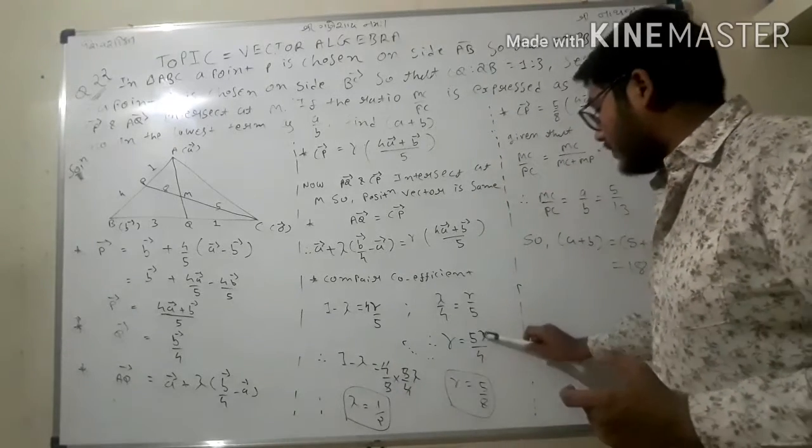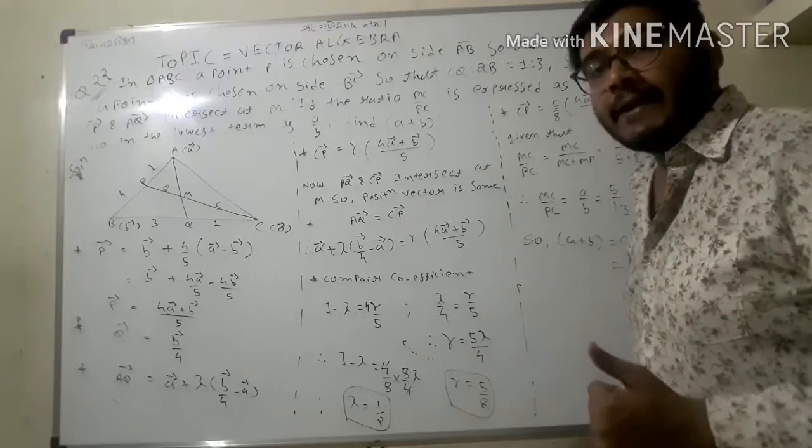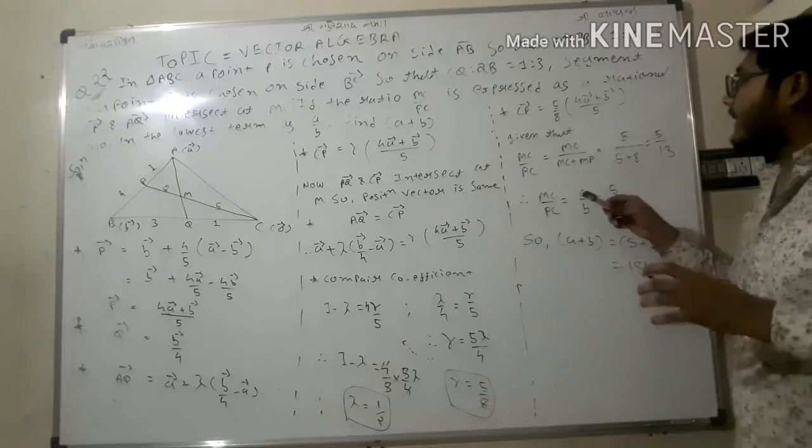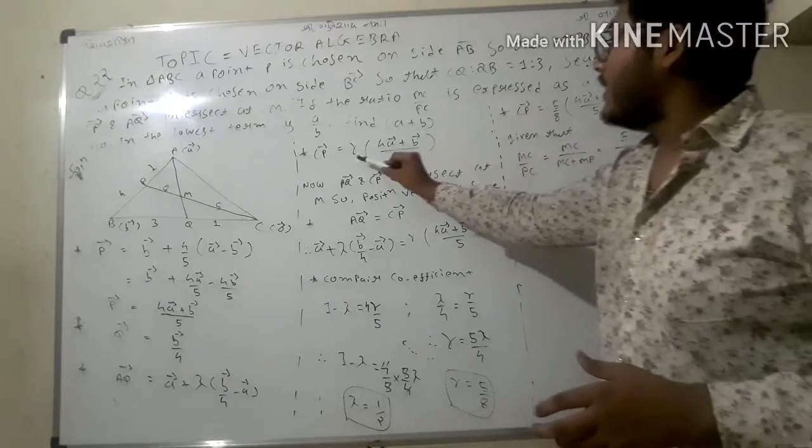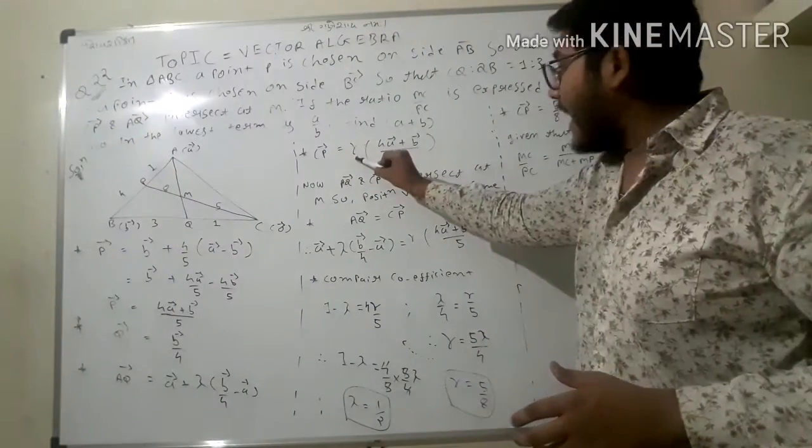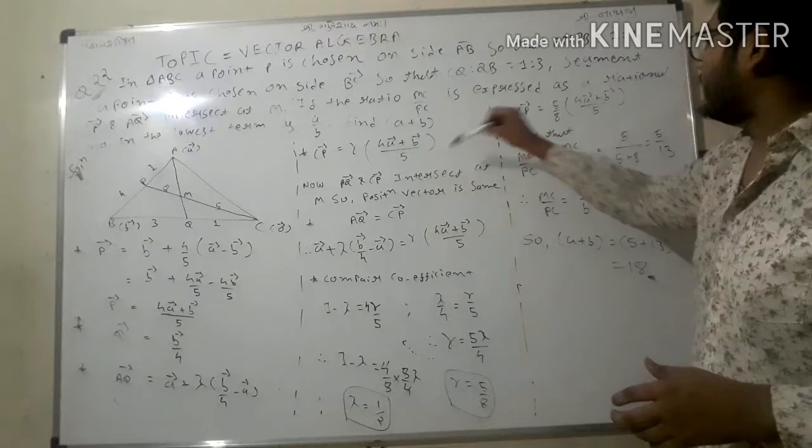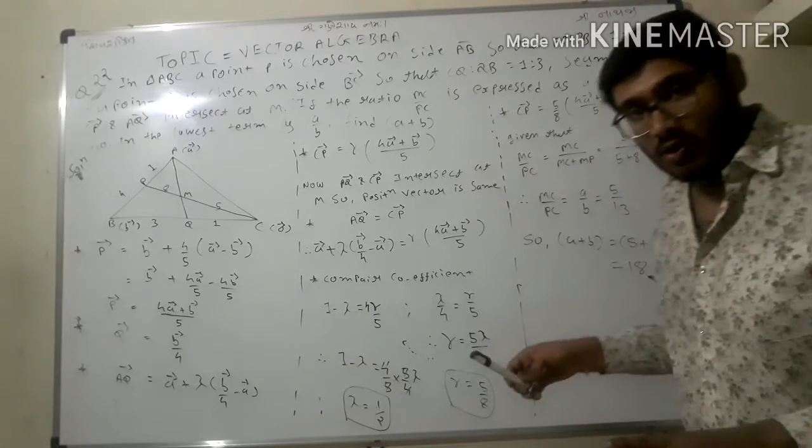I get 5 gamma equals 5 upon 8. Now our solution becomes simple: CP vector equals gamma times, where the value of gamma is 5 upon 8.